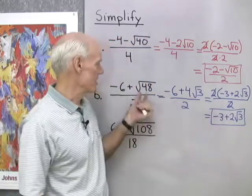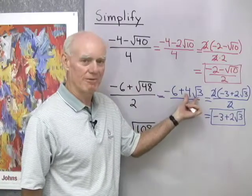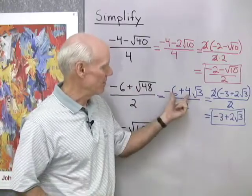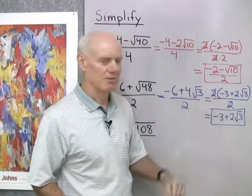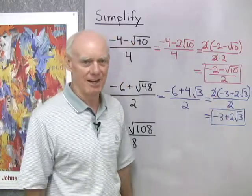And we use the same process. We took the radical, put it in simplified form, look for a factor that's common to those two terms, factor it outside, if that factor appears in the denominator, then we divide it out if we can.